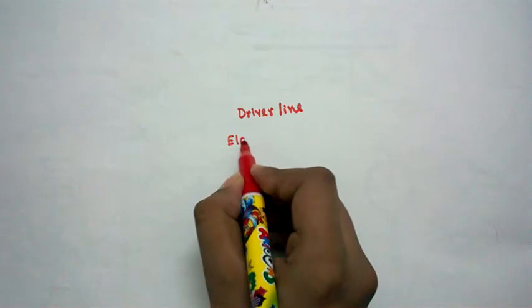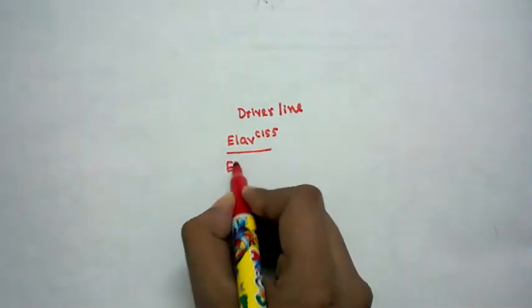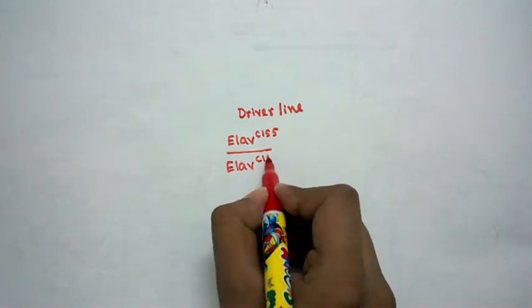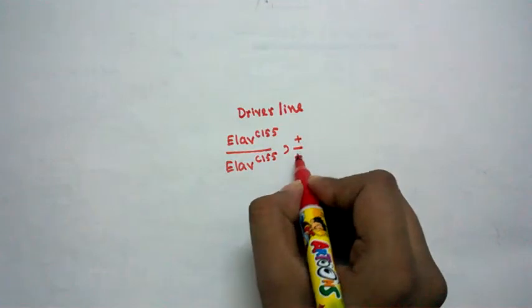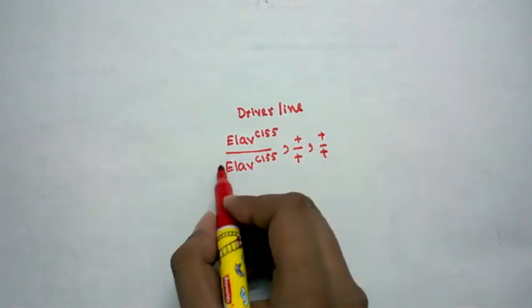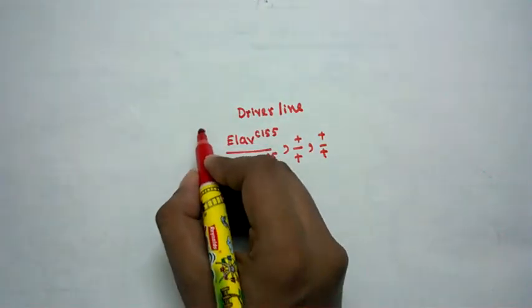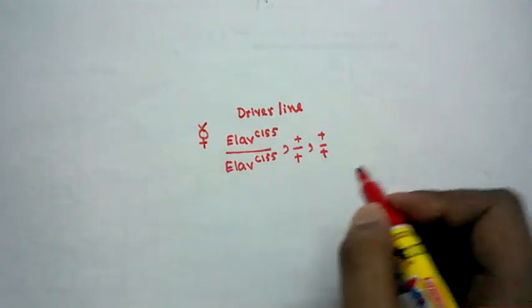So it's ELAV-C155 over ELAV-C155 in the first chromosome and the other chromosomes, there is no manipulation. So here we take the virgin female of this driver line.